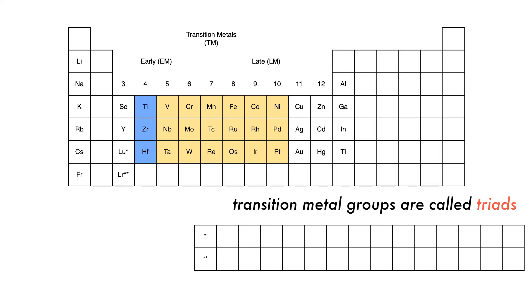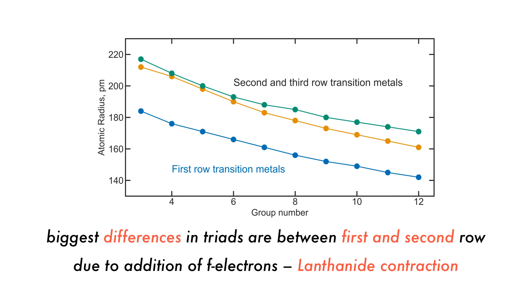Columns in the d-block contain three elements and are called triads. Within each triad, we see largest differences in properties between the first and second row of the transition metals. This is shown here in their atomic radius, as the second and third row are substantially larger than the first row.